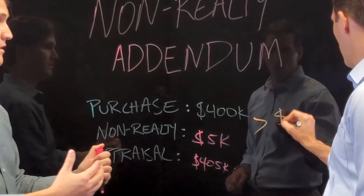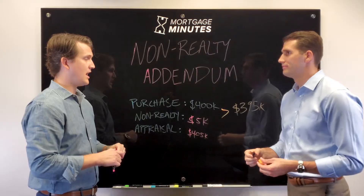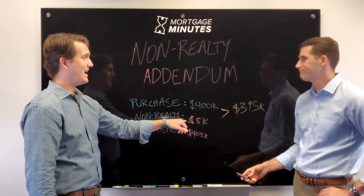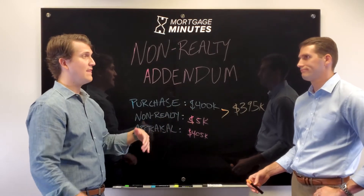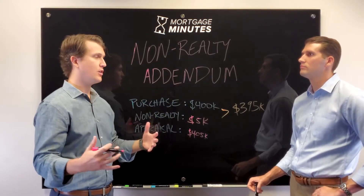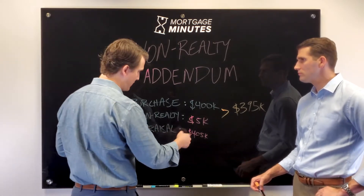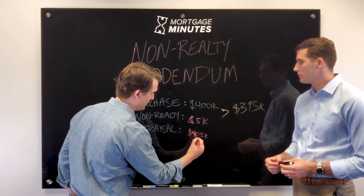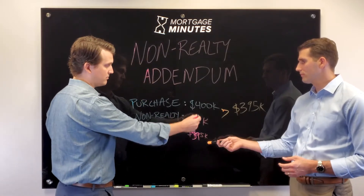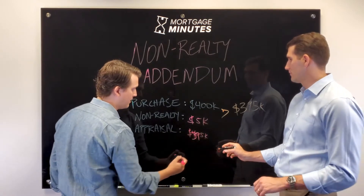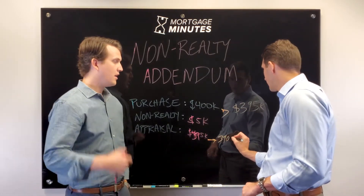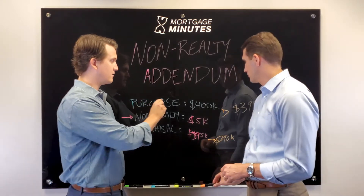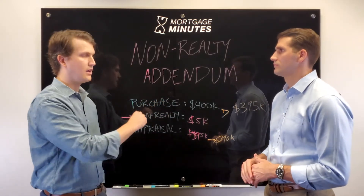So we end up at $395,000. Now if your borrower still wants those non-realty items, they're going to have to come out of pocket that five grand to get it, and we've got a delta in the purchase price — this can really put your borrower behind the eight ball if you're not careful. In another scenario, let's say the appraisal comes in at $395,000 instead. Now we're really in trouble because we have to subtract the $5,000 from the $395,000, bringing us down to $390,000. Whatever value is on that non-realty addendum will be subtracted from whichever of those comes in less.